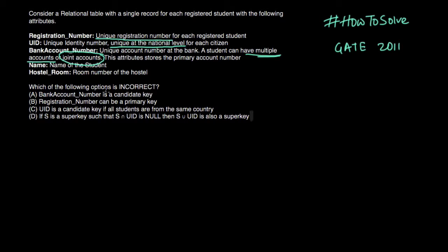Now the question is which of the following option is incorrect. So you need to be careful. They are asking incorrect, not correct. Now the first option is bank account number is a candidate key. The information given is like a student can have multiple bank accounts. But as only the primary is stored so there is no problem.